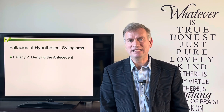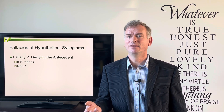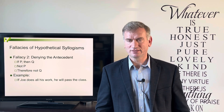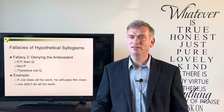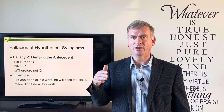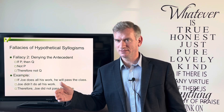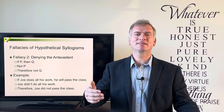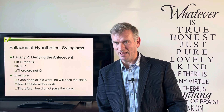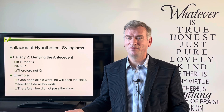Fallacy two is denying the antecedent. This would look like: if P, then Q; not P, therefore not Q. For example: if Joe does all his work, he will pass the class. But Joe didn't do all his work — denying the antecedent — therefore Joe didn't pass the class. Well, again, maybe I allowed him to pass the class anyway. So it would be a fallacy to conclude that just because he didn't do all his work, he did not pass the class. If I had said the only way Joe can pass the class is if he does all his work, then you could come to that conclusion.